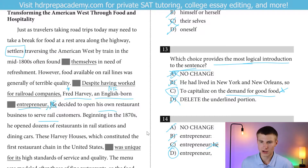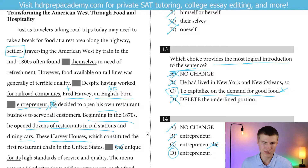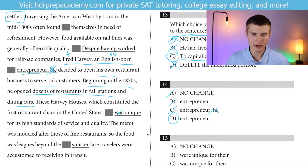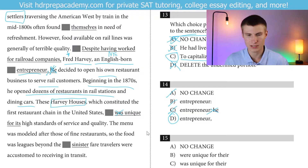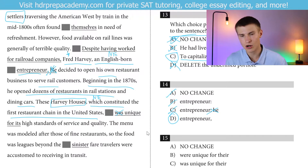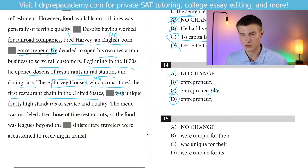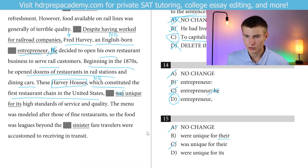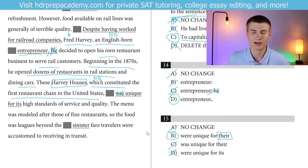Beginning in the 1870s, he opened dozens of restaurants at rail stations and dining cars. These Harvey houses, which constituted the first restaurant chain in the United States, will have to be 'were unique.' How do I know? We are referring to 'the Harvey houses,' which is plural, so we have to have the plural 'were' — 'was' would be singular. This is non-essential — if we take it out, 'these Harvey houses were unique' still makes sense. We can get rid of A and C because they have 'was.' The pronoun also has to be plural, so it can't be 'its.' Our answer for question 15 has to be B.